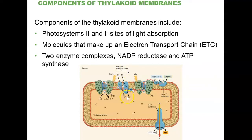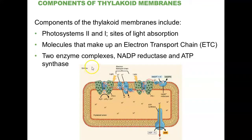The proton gradient generated by the first electron transport chain between Photosystem II and Photosystem I is used to power ATP synthase, which generates a continuous output of ATP from inorganic phosphate and adenosine diphosphate — just like in cellular respiration. One notable difference is polarity: in cellular respiration, protons are pumped out of the mitochondrion. In photosynthesis, protons are pumped into the lumen of the thylakoid stacks and then diffuse back out into the stroma through ATP synthase.